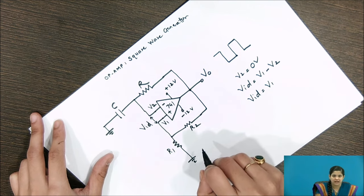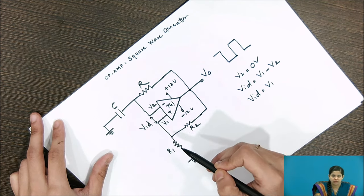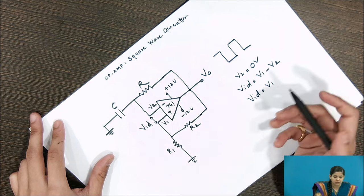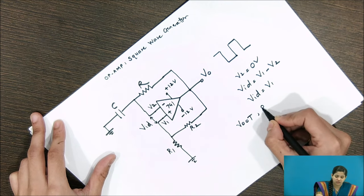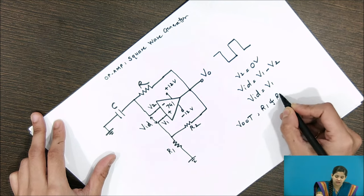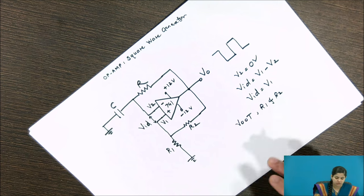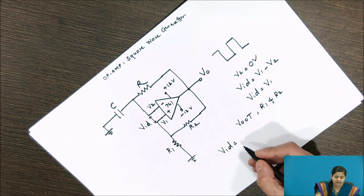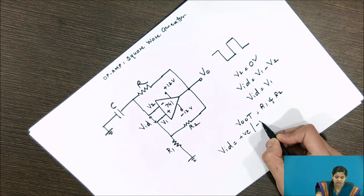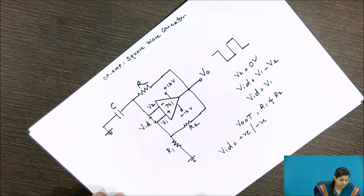Think about what the value of V1 will be, since we are not providing any kind of input. V1 is a function of the output offset voltage and also depends on the values of R1 and R2. So VID is essentially the output offset voltage, but VID can be positive or negative depending on the polarity of the output offset voltage. Let us consider that initially VID is a positive voltage.